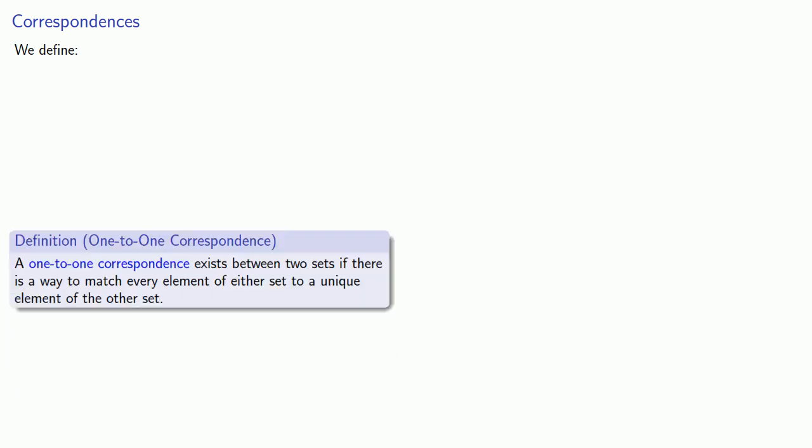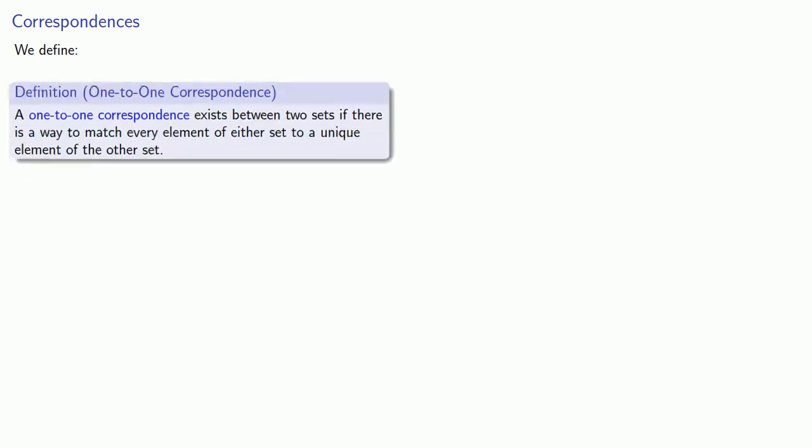Another thing you can do once you have two sets is to define a one-to-one correspondence. A one-to-one correspondence exists between two sets if there is a way to match every element of either set to a unique element of the other set.